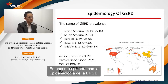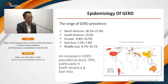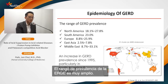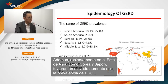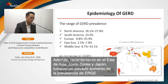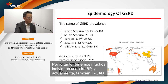Let's begin with GERD epidemiology. The range of GERD prevalence is very wide. North America and South America have a very high prevalence. Recently, East Asia — including Korea and Japan — has seen a very high and increasing GERD prevalence, so we are using more and more PPI and nowadays also PCAB.